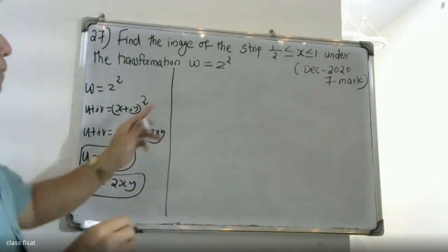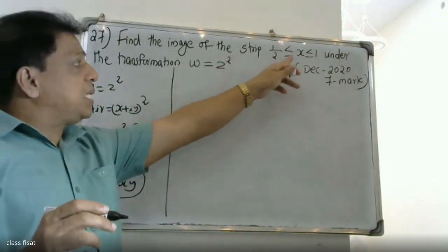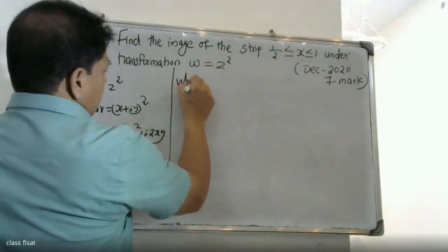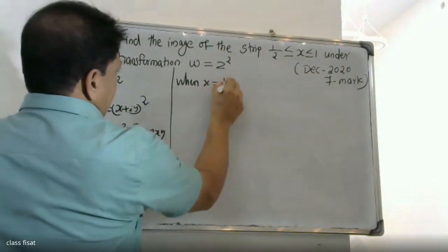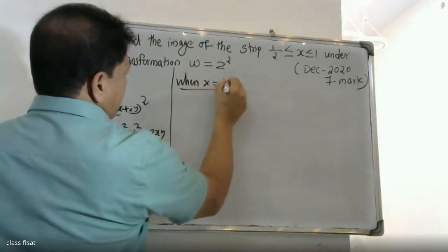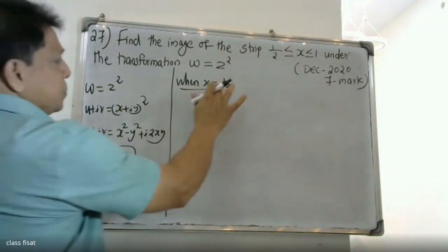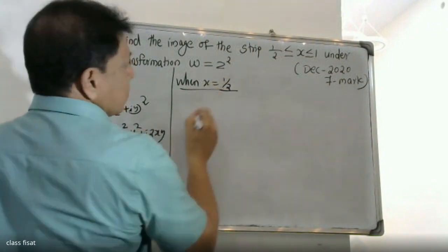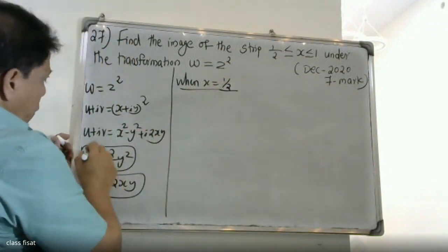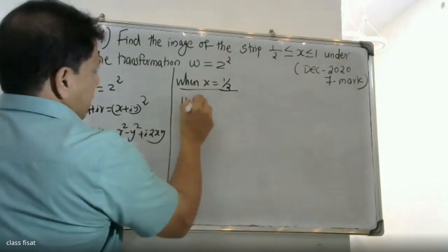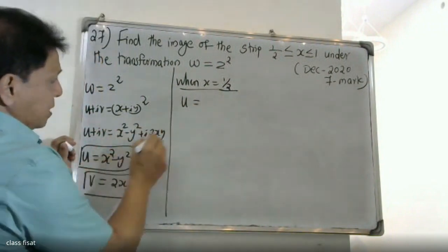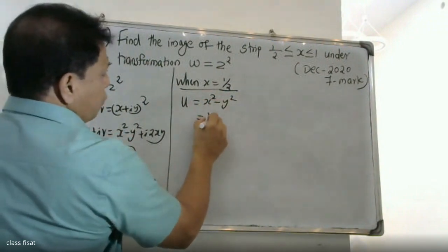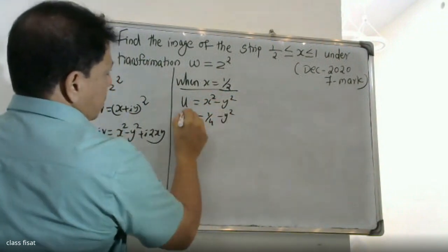We need to find the image of the strip 1/2 ≤ x ≤ 1. When x = 1/2, substituting x = 1/2 into the expressions for u and v.